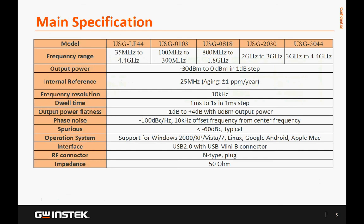The USG Series RF Signal Generator covers the frequency range from 35 MHz to 4.4 GHz. The USG Series provides continuous wave signal outputs without any signal modulation function. The built-in electronic attenuator allows an adjustable power range from minus 30 dBm to 0 dBm.